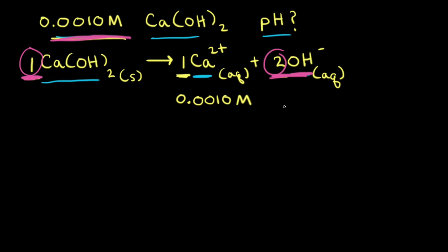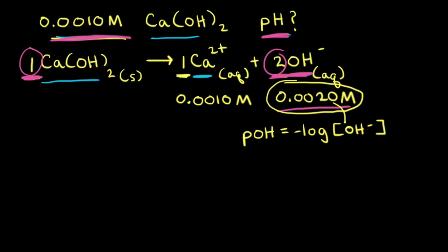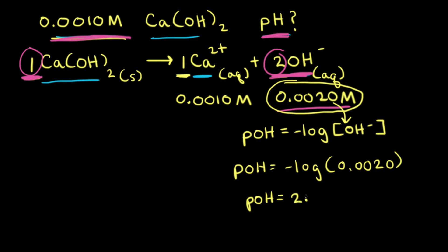So 2 times 0.0010 molar is equal to 0.0020 molar. Now that we know the concentration of hydroxide ions, we can calculate the pH of the solution. One way is to first find the pOH. pOH is equal to the negative log of the concentration of hydroxide ions. Plugging in 0.0020 gives us a pOH equal to 2.70.